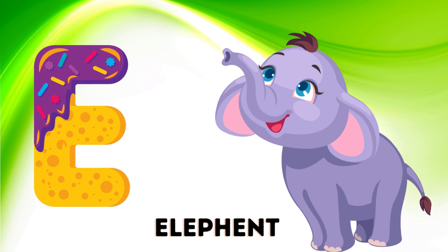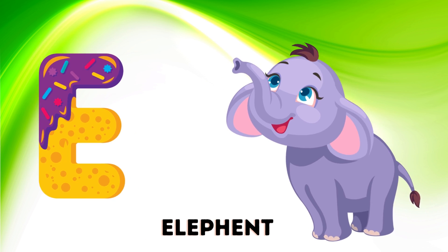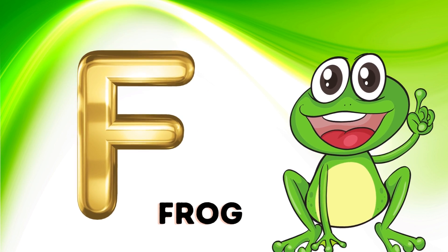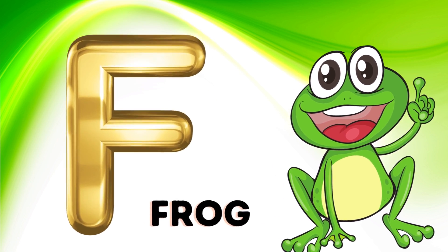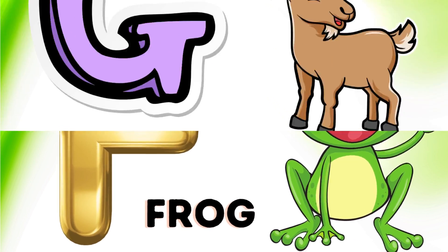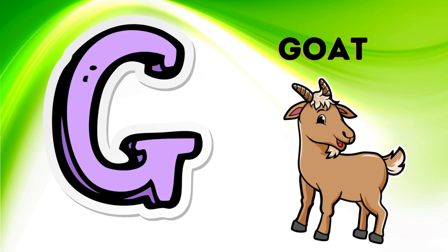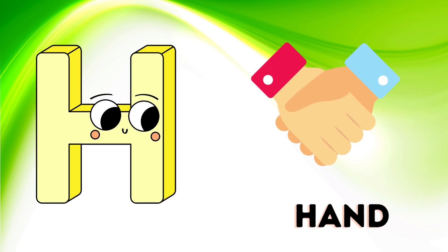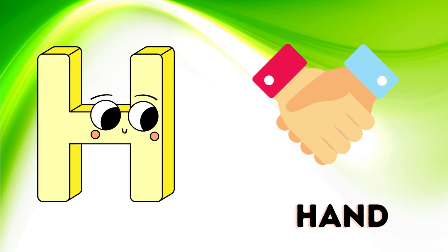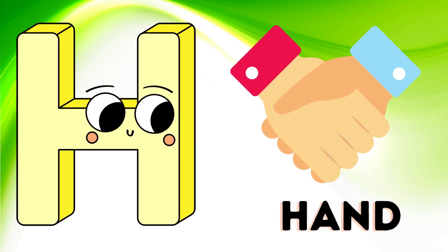E is for elephant, e-e-elephant. F is for frog, f-f-frog. G is for goat, g-g-goat. H is for hand, h-h-hand.